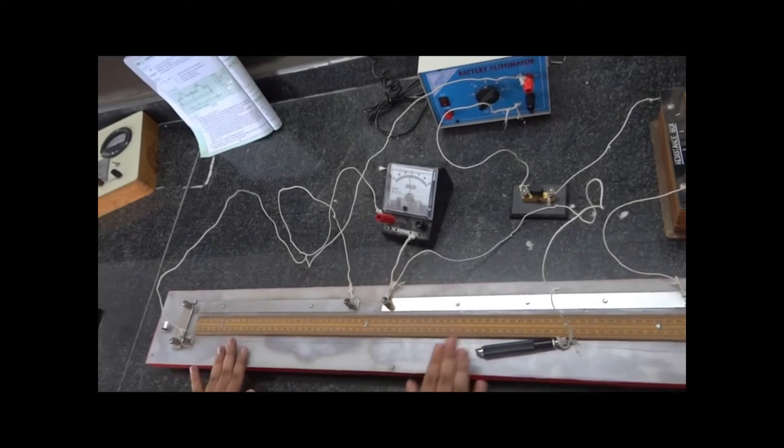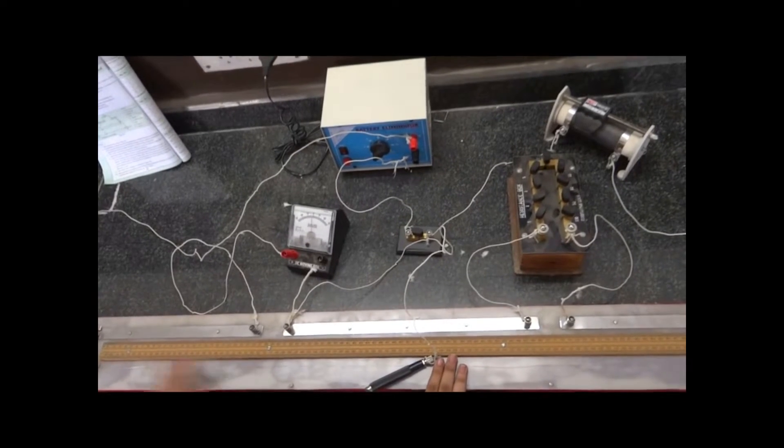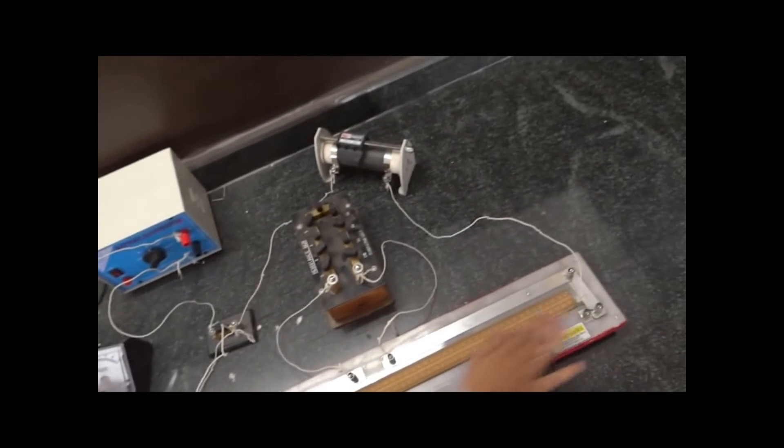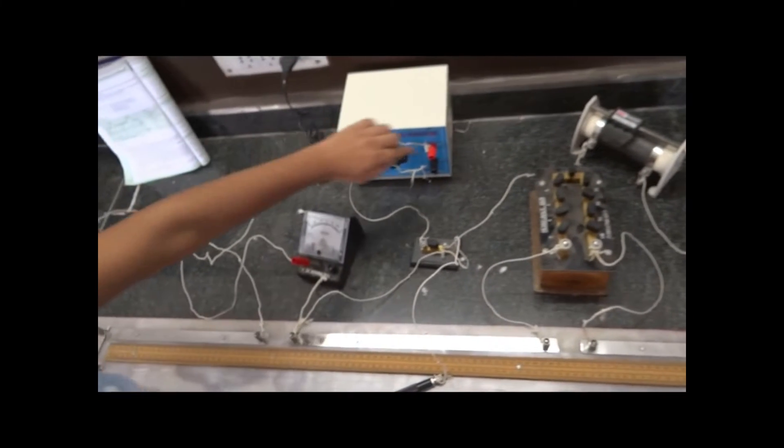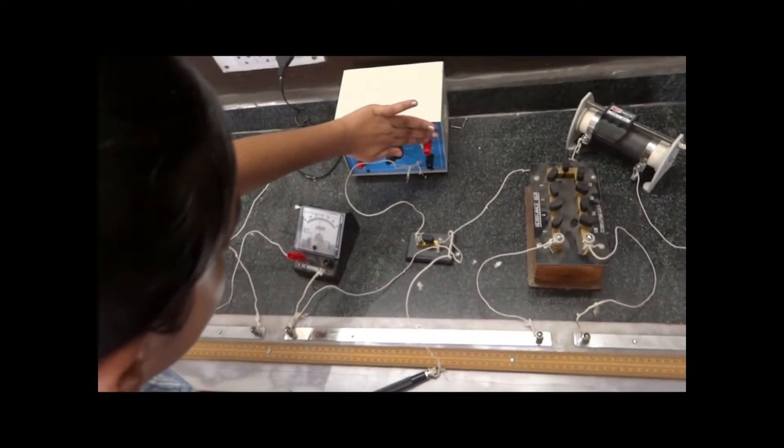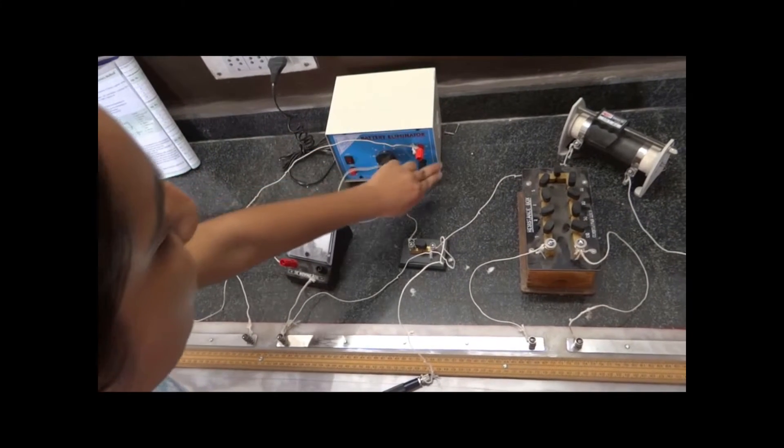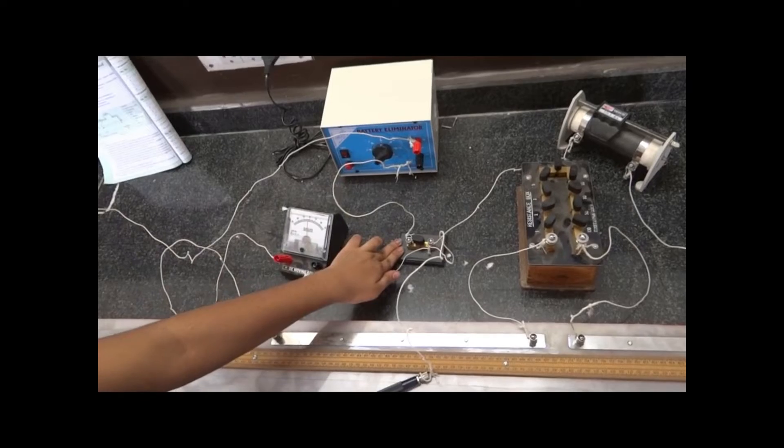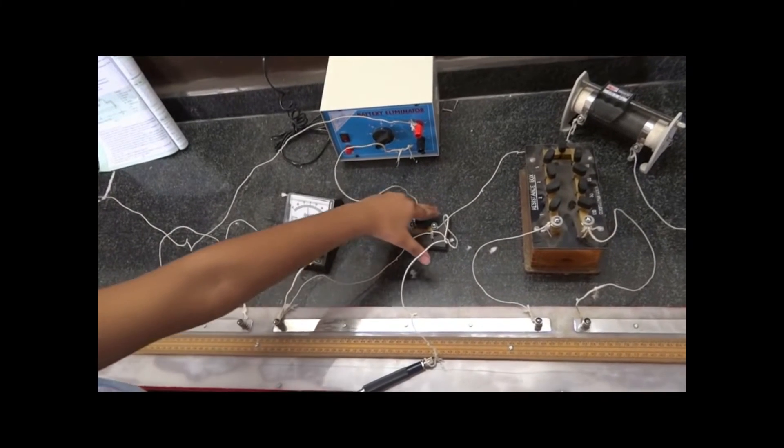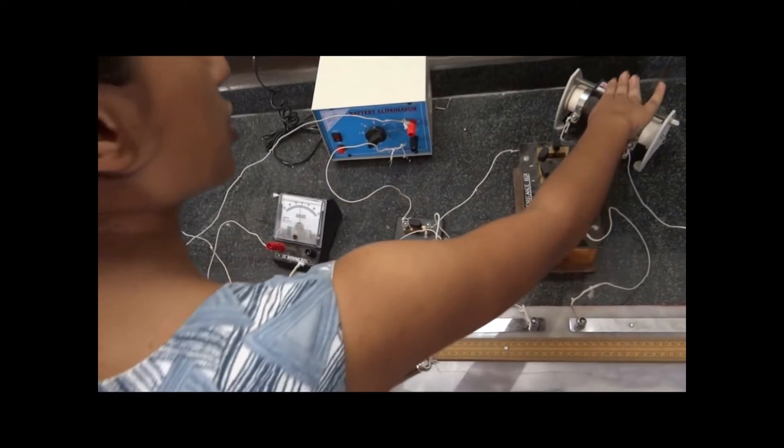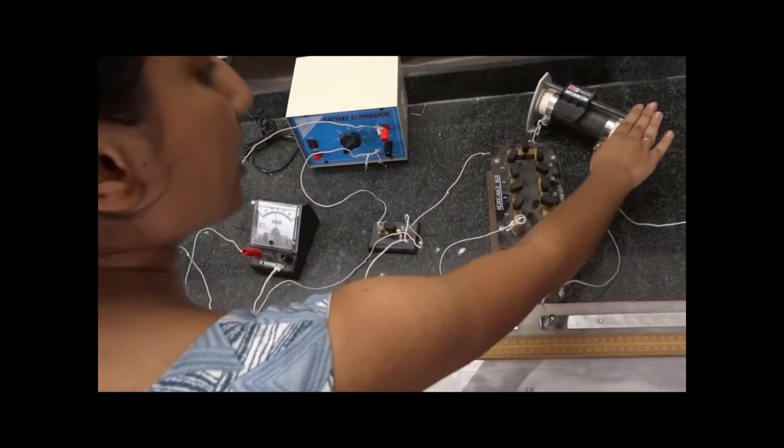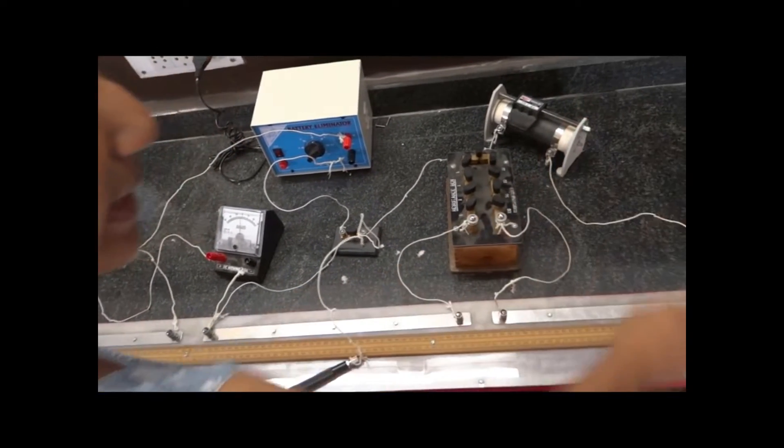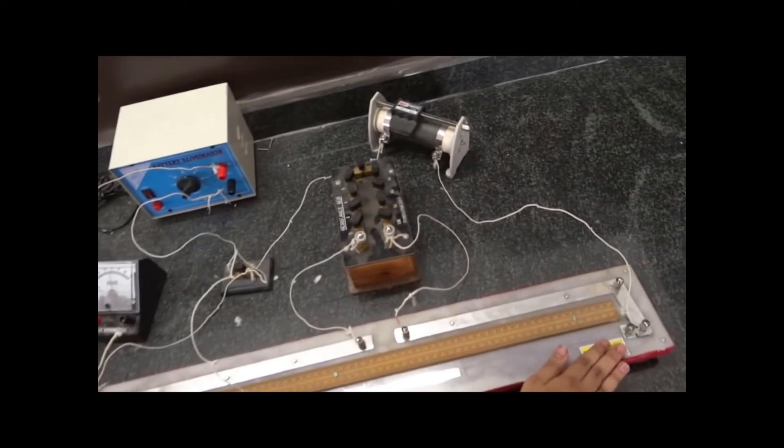Now we have connected the circuit with the Wheatstone meter bridge. The first point is connected to the positive terminal of the battery eliminator, and the negative terminal is connected to one point of the plug key. The other point of the plug key is connected to the rheostat, and the other point of the rheostat is connected to the second point of the meter bridge.